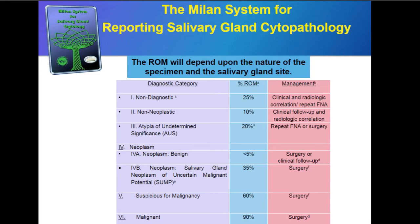This is a very important table from chapter one, with lead authors Dr. Baloch and Dr. Andrew Field. It shows the risk of malignancy and a summary of the management algorithm for each diagnostic category. Aside from the non-diagnostic category, starting at non-neoplastic and moving upward toward malignant, the percent risk of malignancy generally increases. These are mean risk of malignancy figures based on a detailed review of the literature. Notably, the neoplasm benign category is associated with a less than 5% risk of malignancy — very important because some patients will decide to have clinical follow-up rather than surgery.